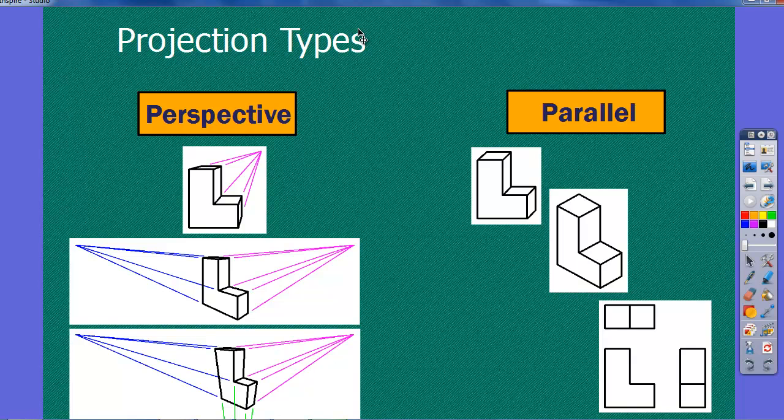So which way do we go? In the arts and in architectural drafting, they'll use perspective because it gives more of a realistic feel. But it's a lot harder to do, takes a lot more time. And so in mechanical drafting, what we do is we use parallel projection.